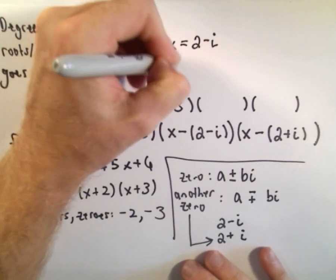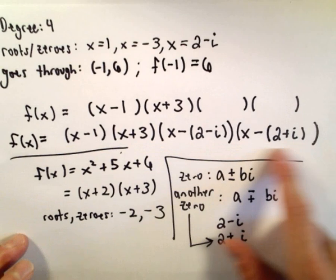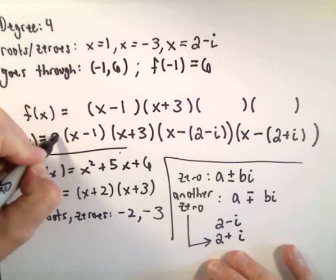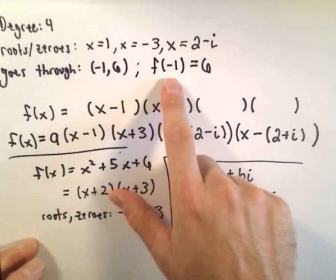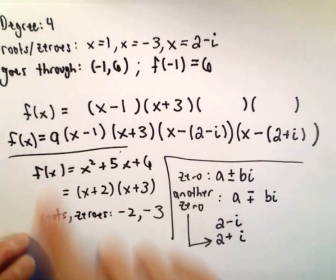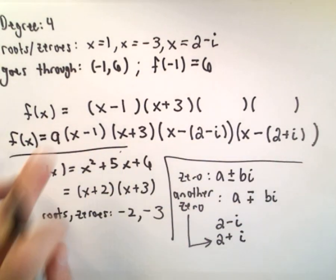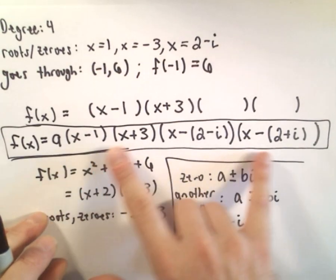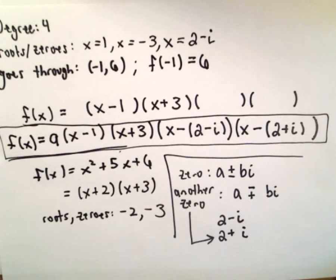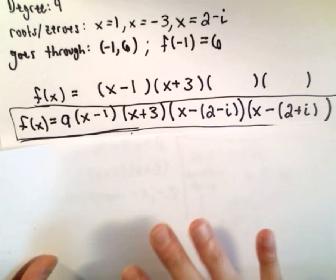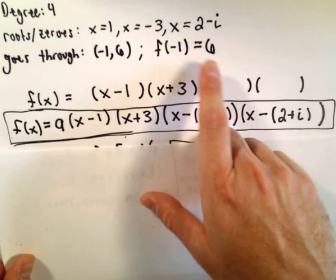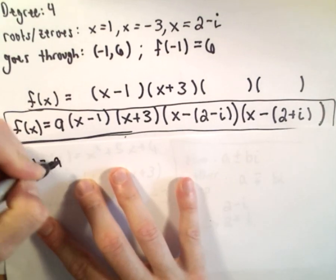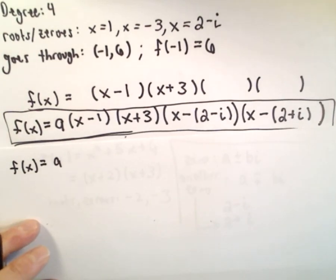The point negative 1 comma 6 tells us that if we plug negative 1 into our function, we get 6 out. We account for that by putting a generic coefficient 'a' out front, and we'll use f of negative 1 equals 6 to solve for a. Having a coefficient out front isn't going to change any of those roots or zeros. Now we have to multiply all of this out — that's the long part.